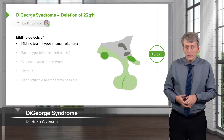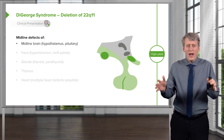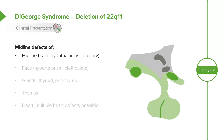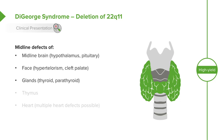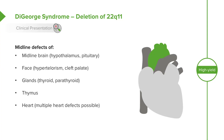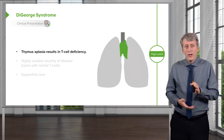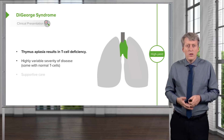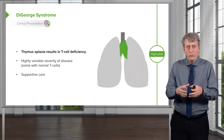Lastly, let's touch on DiGeorge syndrome. This is another disease where patients can get T-cell deficiency, but they don't always have it — there's a wide variety of severity. It's a deletion of 22q11, and these patients will have midline defects affecting the brain, face (such as hypertelorism or cleft palate), and midline glands like the thyroid or parathyroid. It can also affect the thymus, which is responsible for making T-cells, resulting in thymus aplasia and T-cell deficiency. They can also have multiple congenital heart defects. The severity is highly variable, and we generally provide supportive care.